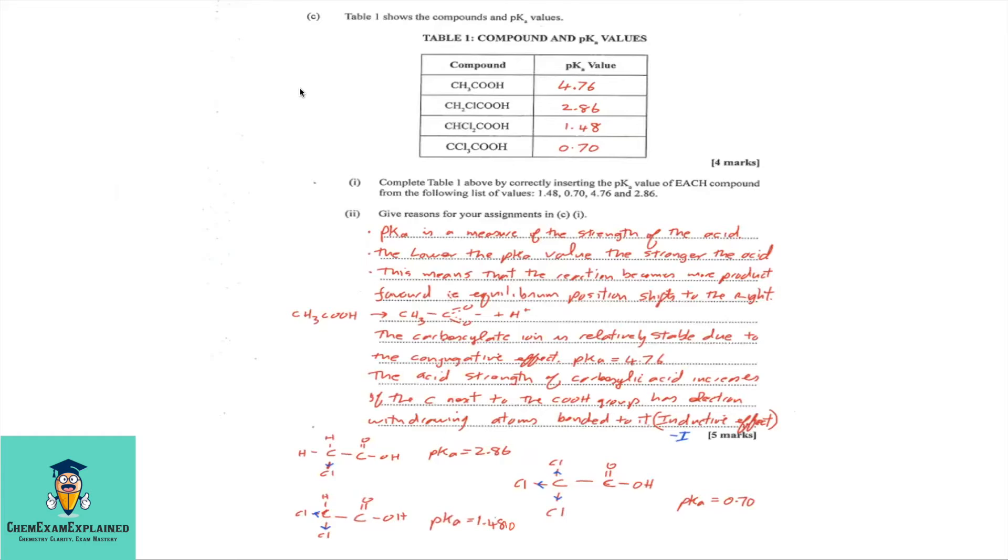Part C. Table 1 shows the compounds and the pKa values. Now, if you look at the table, you'll notice that going from ethyl propanoic acid to chloroethanoic acid to dichloroethanoic acid and trichloroethanoic acid, you'll notice that the pKa value is decreasing. Now, if you know anything about Ka, you'll know that Ka deals with acid dissociation. So, the higher the Ka, the greater the acidity. The lower the Ka, the lower the acidity.